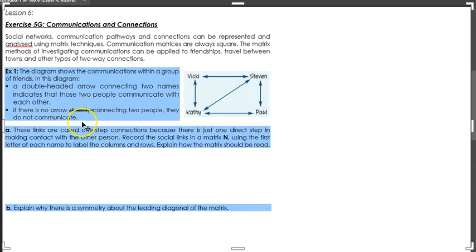Now, that does not mean that they don't communicate via another person, they can, they just don't directly, and there's a key word there, directly connect with each other. You can see that the most popular people are Cathy, because they talk to each person, and Stephen, because they talk to each person, they communicate with the three people that are there. Vicky and Paul aren't so popular because they only talk to two people, but not with each other.